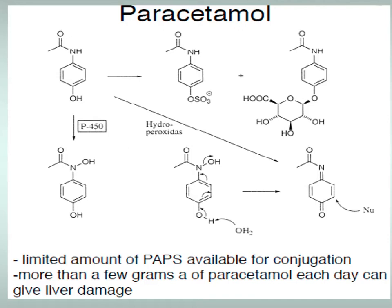Toxicity of chemical compounds is caused by the interaction of the organism, toxins, and the environment. Toxicity of toxic substances depends on many factors: dose and concentration of the substances, physical and chemical properties, routes of entry and absorption rate, individual sensitivity, condition of the organism, presence of other substances, and chemical structure of the substances.